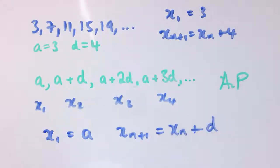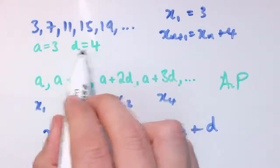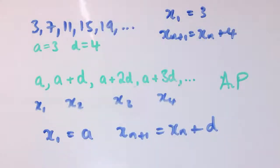To go from xₙ to xₙ₊₁ we add on d. So we start at a, and from one term to the next we add on d: a, a plus d, a plus 2d, a plus 3d. For example, this one, x₄ is a plus 3d, so that's 3 plus 12, that's 15. That is x₄, so that works.